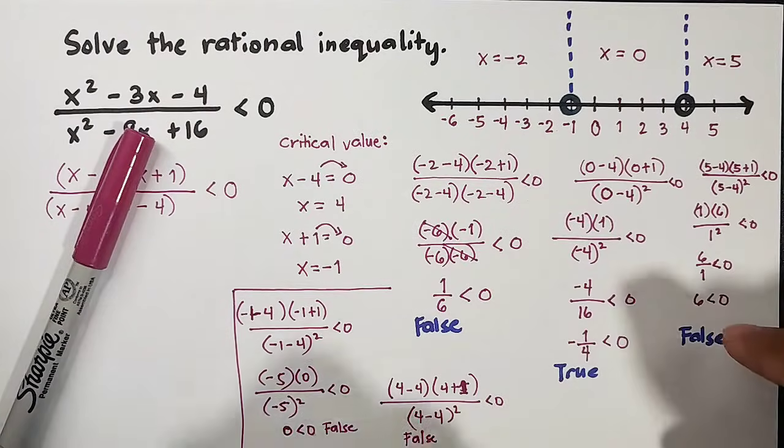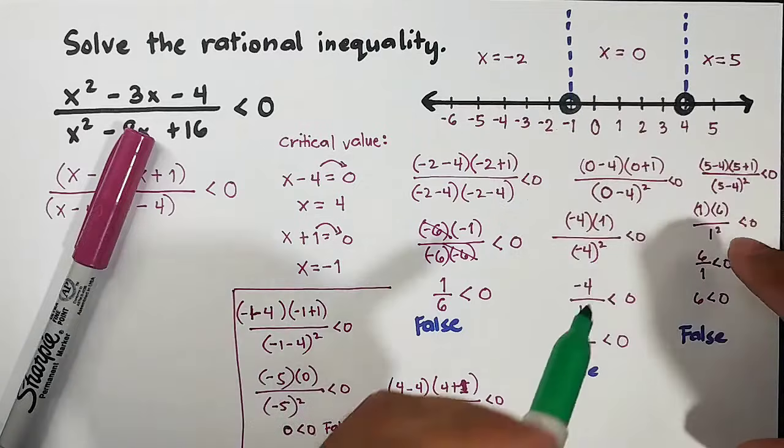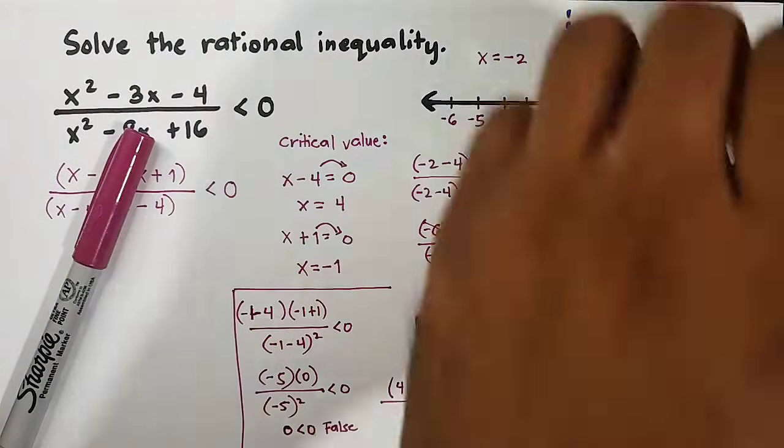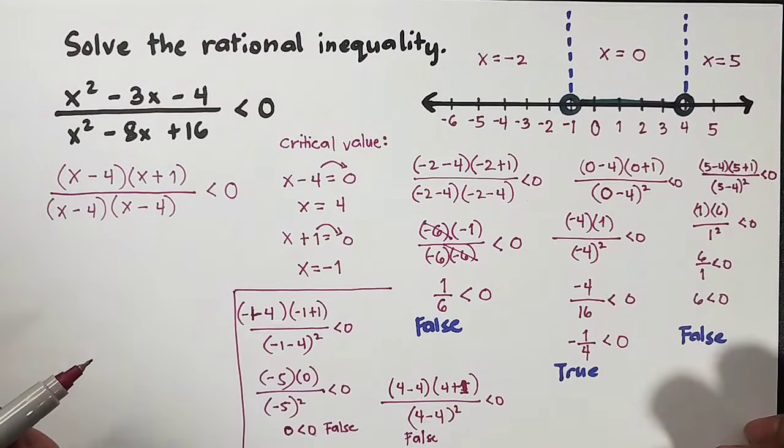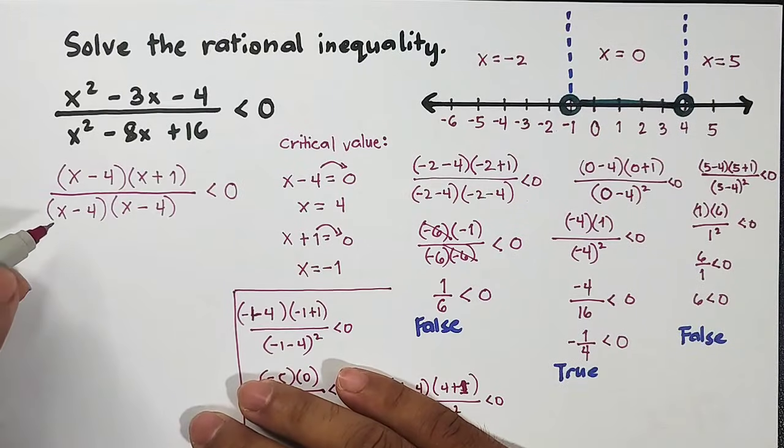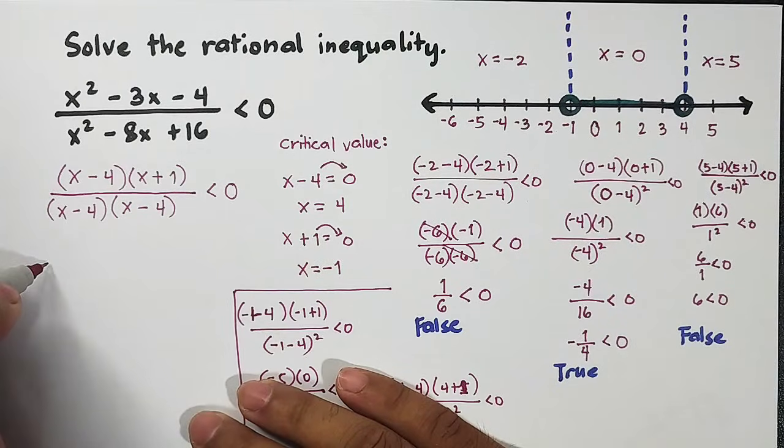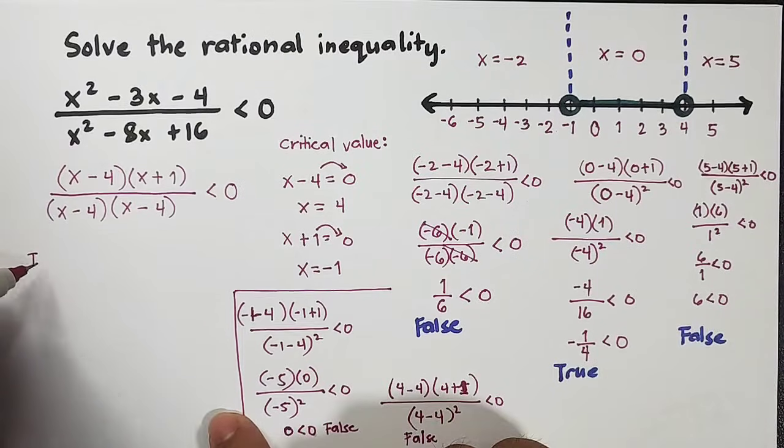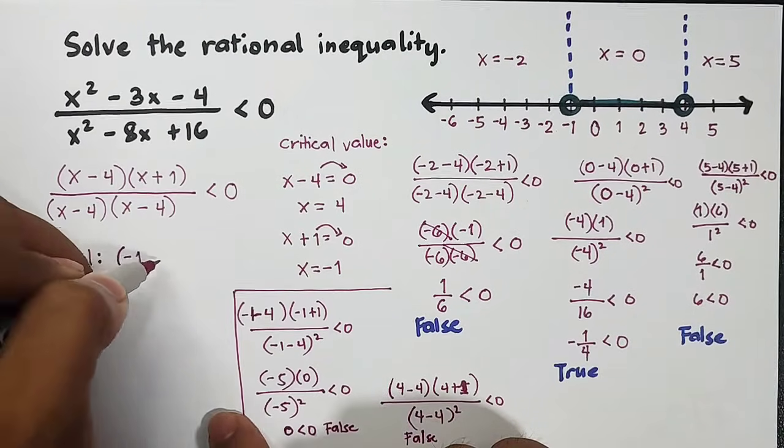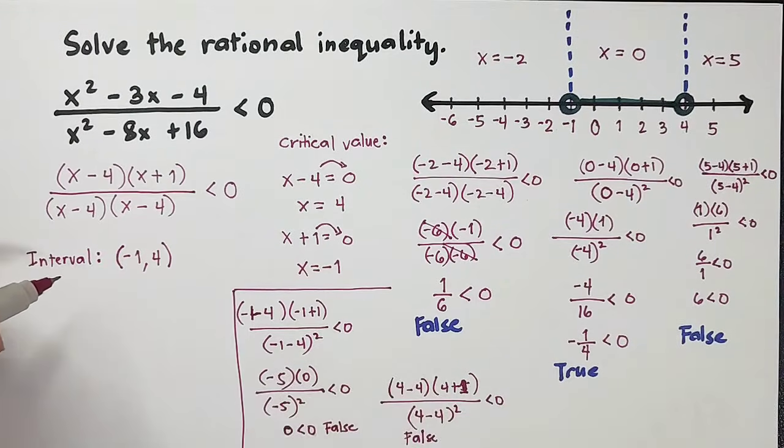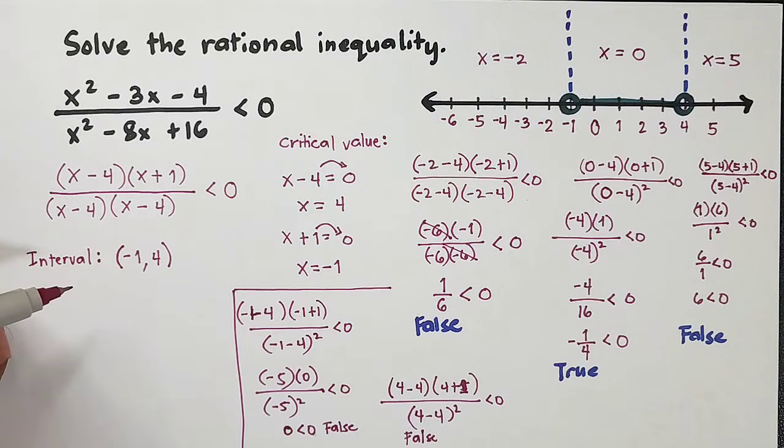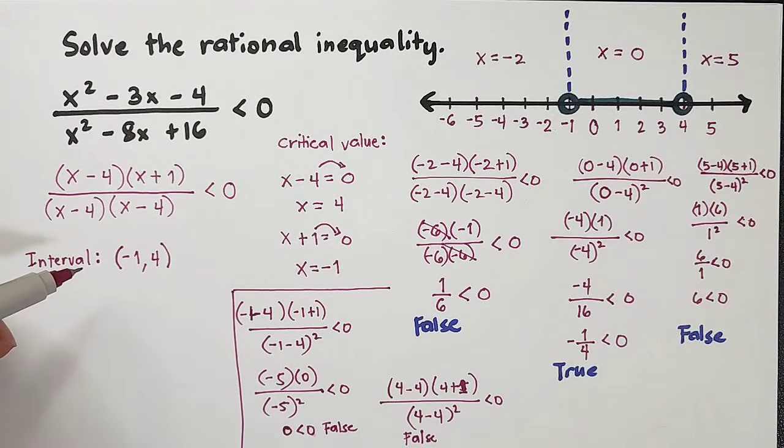Now for the graph. Earlier we said the middle region is shaded, but the ends—the two critical values—are not included. How do we write this in interval notation? We have open circles at -1 and 4. Using parentheses: (-1, 4). Parentheses mean not included or not included.